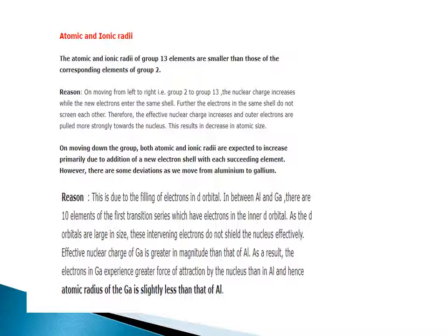On moving down the group, both atomic and ionic radii are expected to increase, primarily due to the addition of a new electron shell with each succeeding element. However, there are some deviations as we move from aluminium to gallium, due to filling up of electrons in d-orbitals. Between aluminium and gallium, there are 10 elements of the first transition series whose d-orbital electrons do not shield the nucleus effectively. As a result, the effective nuclear charge of gallium is greater than that of aluminium, and hence the atomic radius of gallium is slightly less than that of aluminium.